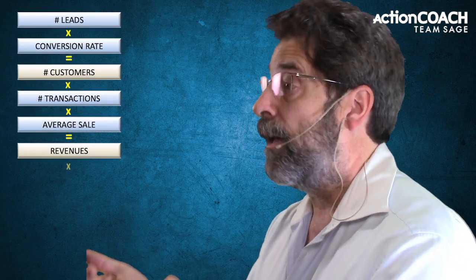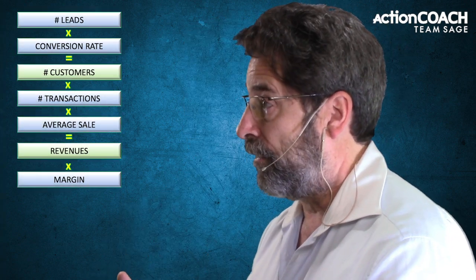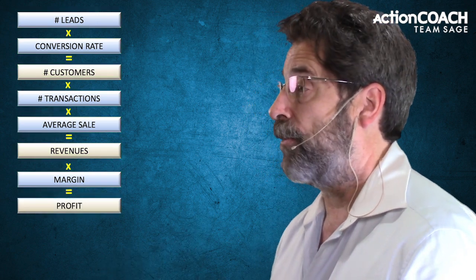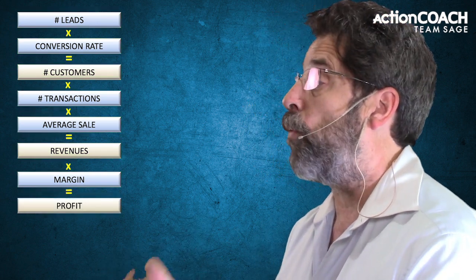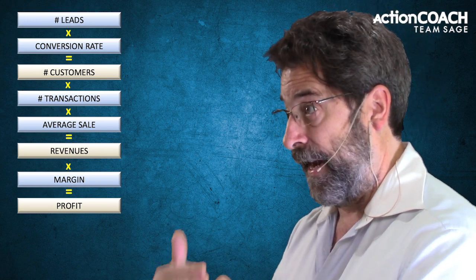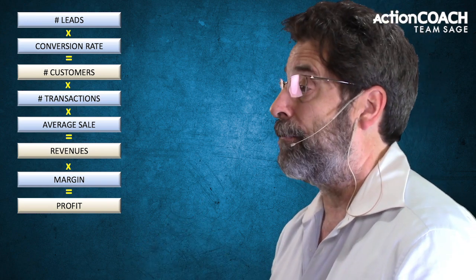So that's the first two: number of leads and conversion rate. Now your number of customers times your number of transactions — that's how many times they actually purchased from you on average — times your average dollar sale — how much they spend with you on average — gives you your revenues. Then your revenues times your margins, that's the fifth one, gives you your profits. The margin is what percentage of what you bring in you get to keep as profit.